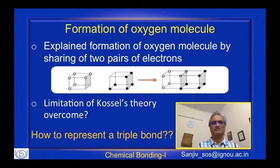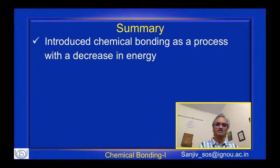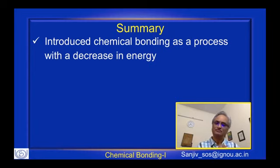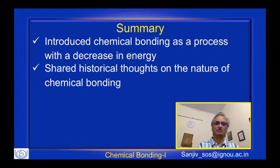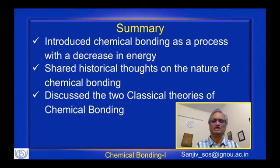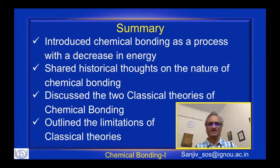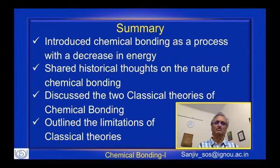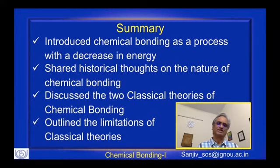To sum up today's session: we introduced chemical bonding and established that a chemical bond is any process that leads to a decrease in the energy of the system. We discussed a few historical thoughts on bonding and then covered two classical theories — Kossel's theory of ionic bond formation and Lewis's theory of covalent bond formation — along with their limitations. In the next session, we will introduce the modern quantum mechanical theories — valence bond theory and molecular orbital theory — and see how they address these limitations.